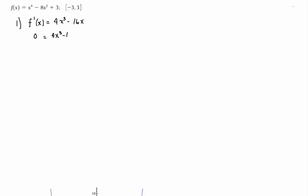You can see that you can factor a 4x out of that and you get x² - 4. That you can factor further as (x + 2)(x - 2), and that gives you the following critical numbers.